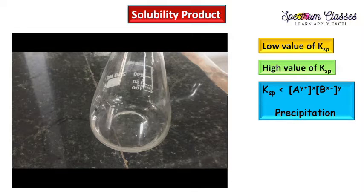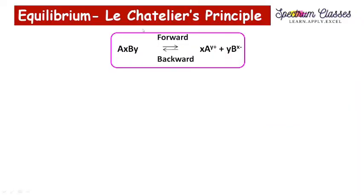This is the concept of Ksp which we are going to use in the acid base radicals. The second concept is equilibrium, and in equilibrium Le Chatelier's principle is important to know. When a salt is dissolved in a solvent, it dissociates into its ions, but complete dissociation does not occur — there is a degree of dissociation, meaning some undissociated part also exists.